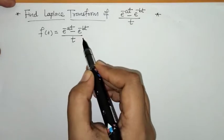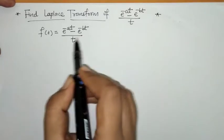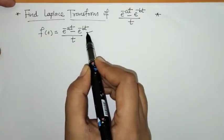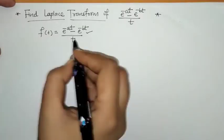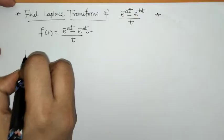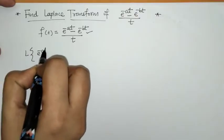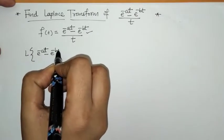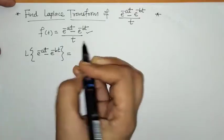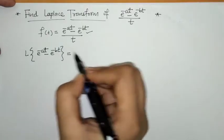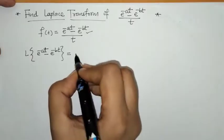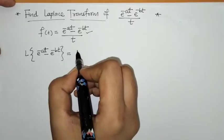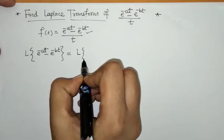Since we have this function divided by t, we have to apply the effect of division by t. First, we have to find the Laplace transform of the numerator — that is, Laplace of e^(-at) - e^(-bt). We can apply the linearity property and find each Laplace separately.